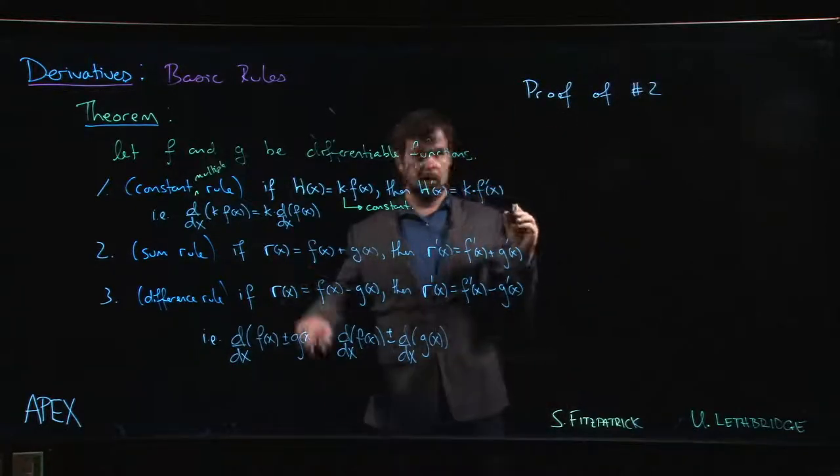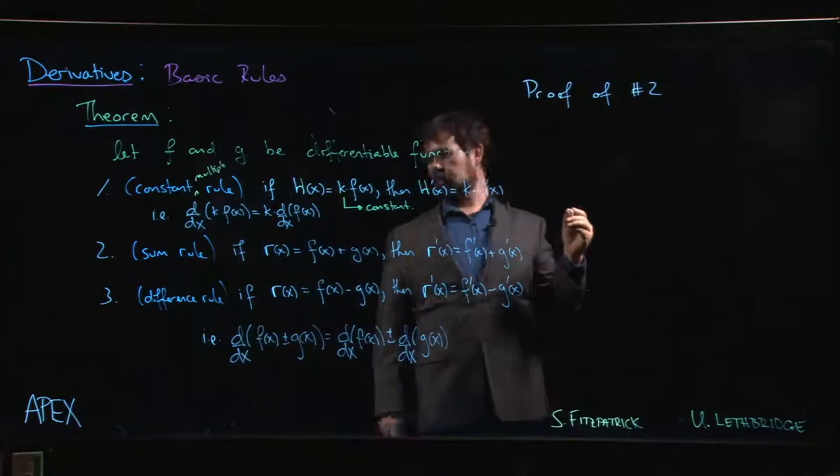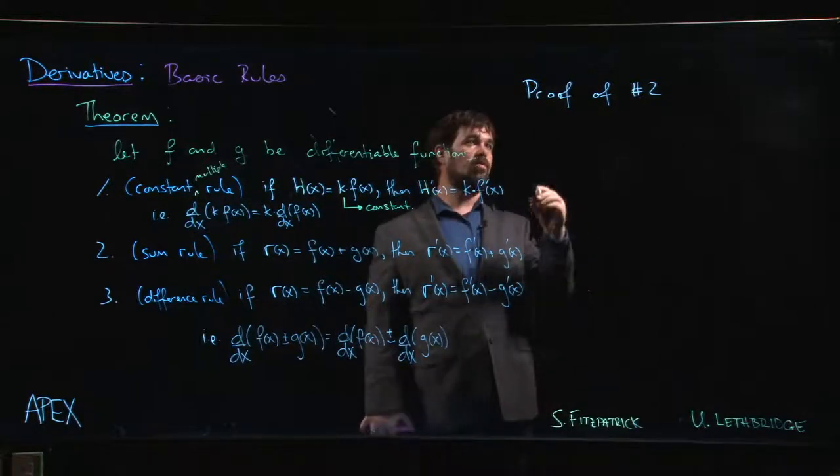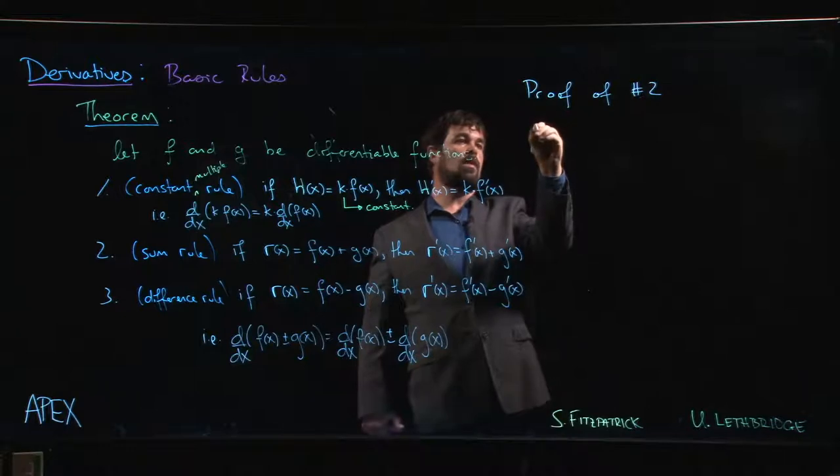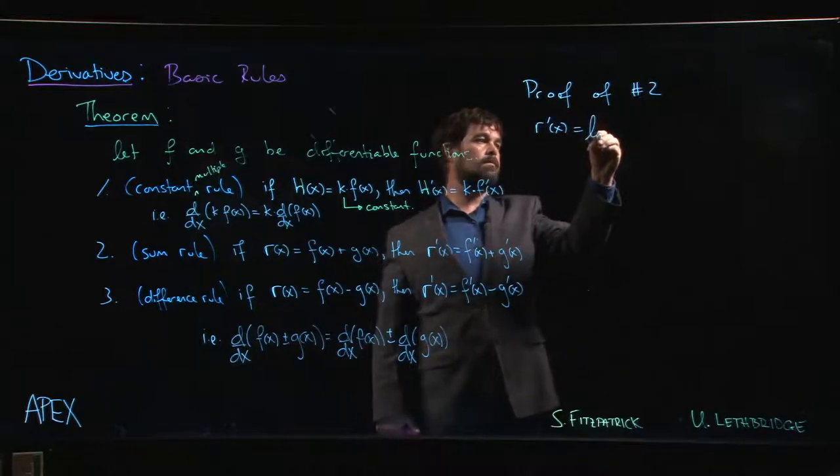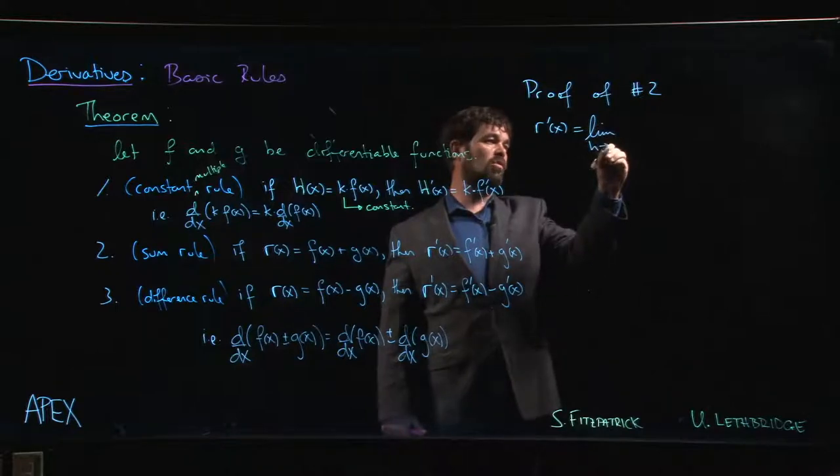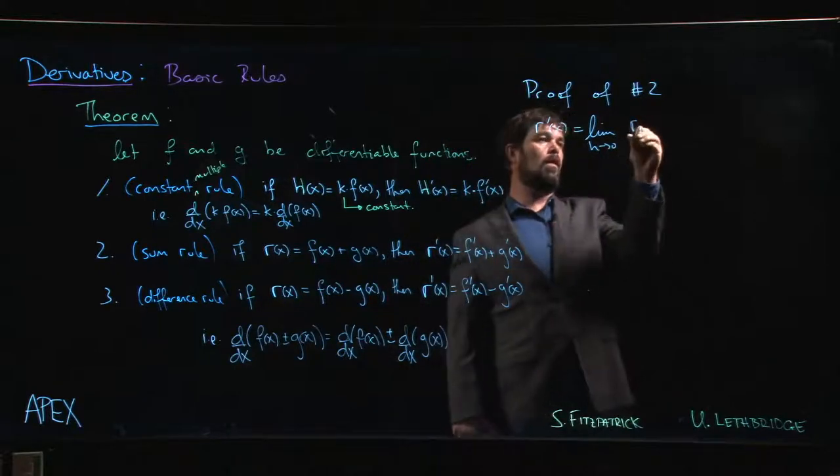I've also changed my notation so we don't have any sort of letters being reused for different things. So we want r prime of x, so that's going to be the limit as h goes to 0 of r of x plus h minus r of x over h.